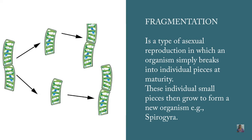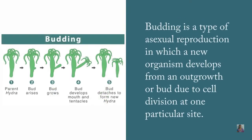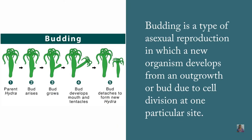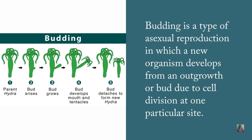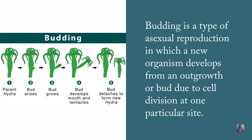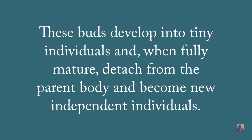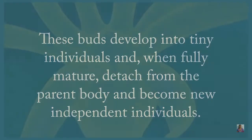This happens in spirogyra. The next type of asexual reproduction is budding. In this process, a new organism develops an outgrowth called a bud. These buds develop due to cell division at one particular site. They develop into a new individual, and when fully mature, detach from the parent body and become a new independent individual. Hydra reproduces asexually by budding.